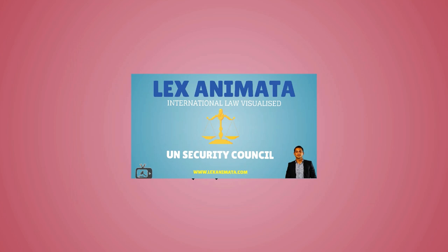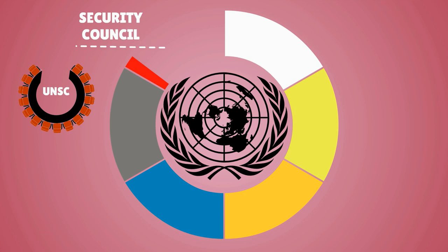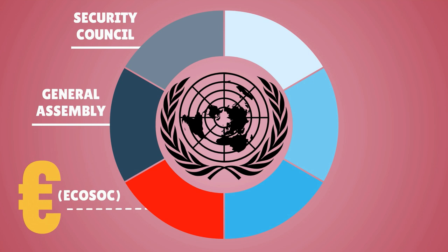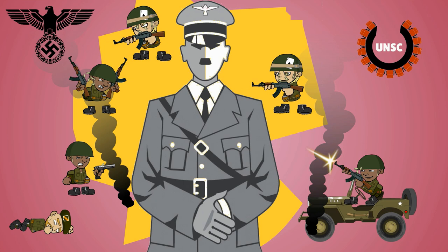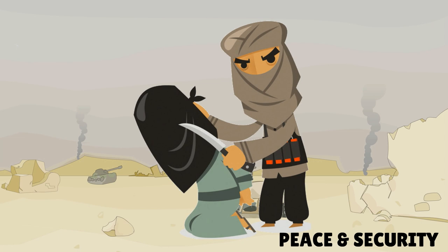The UN Security Council is one of the six principal organs of the United Nations, alongside the General Assembly, the Economic and Social Council, the Trusteeship Council, the International Court of Justice, and the Secretary-General. The Security Council was created following the Second World War as an executive power with the main objective to